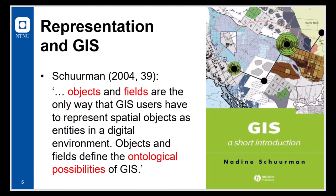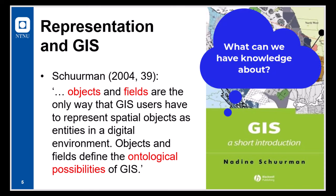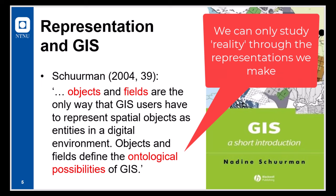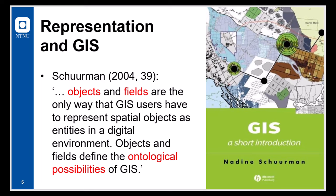How reality or the environment around us is represented in a GIS is a topic covered in all GIS textbooks. Nadima Schumann's textbook from 2004 is not an exception, but she also considered representation as a philosophical issue. The question, what can we have knowledge about, is an issue embedded in the concept ontology. Ontology is about what exists, what is constituting reality. When we study reality, we never study the reality directly. We study reality through our representation. With GIS, we then study reality through objects and fields. And Schumann says that objects and fields are the only way the GIS users have to represent spatial objects. As entities in a digital environment, objects and fields define the ontological possibilities of GIS.